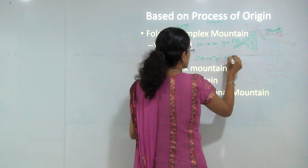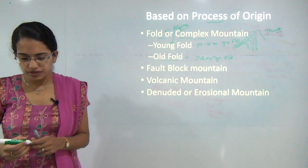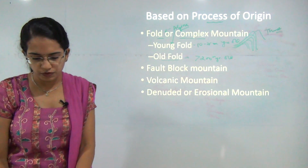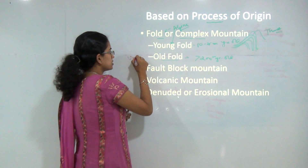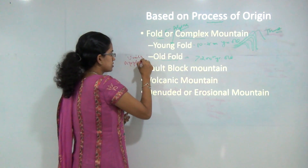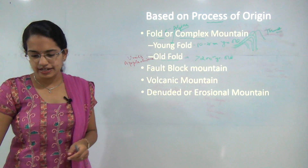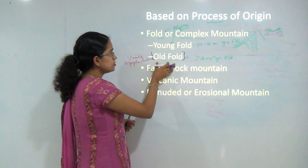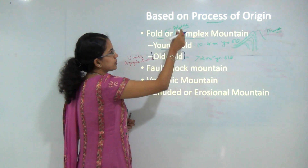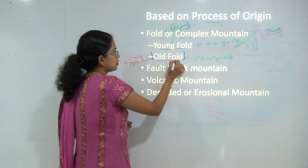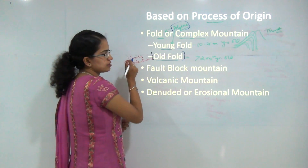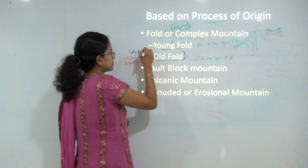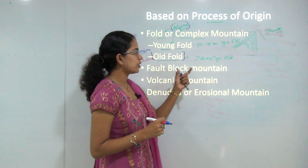Examples of young fold mountains include the Himalayas and the Alps. In contrast, old fold mountains include the Scandinavian and Caledonian ranges. Young fold mountains classically belong to the Alpine range system, while old fold mountains come from the Pre-Cambrian or Caledonian period — mostly from the Caledonian period. Next, we have the fault block mountain.